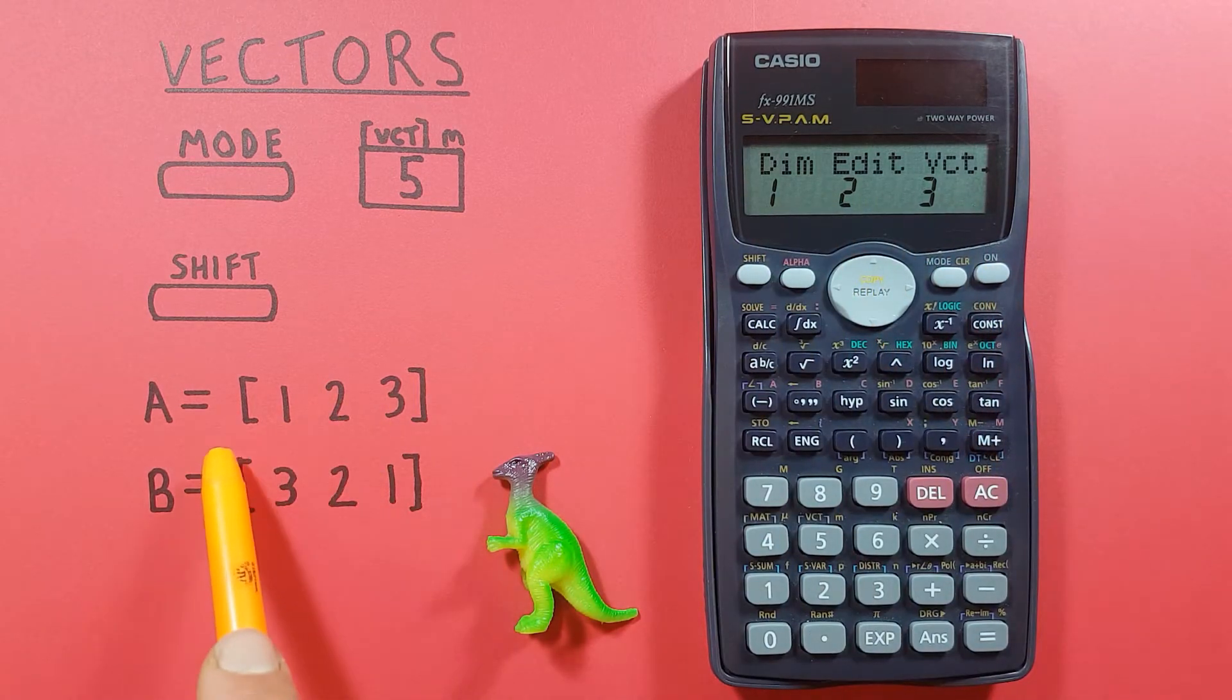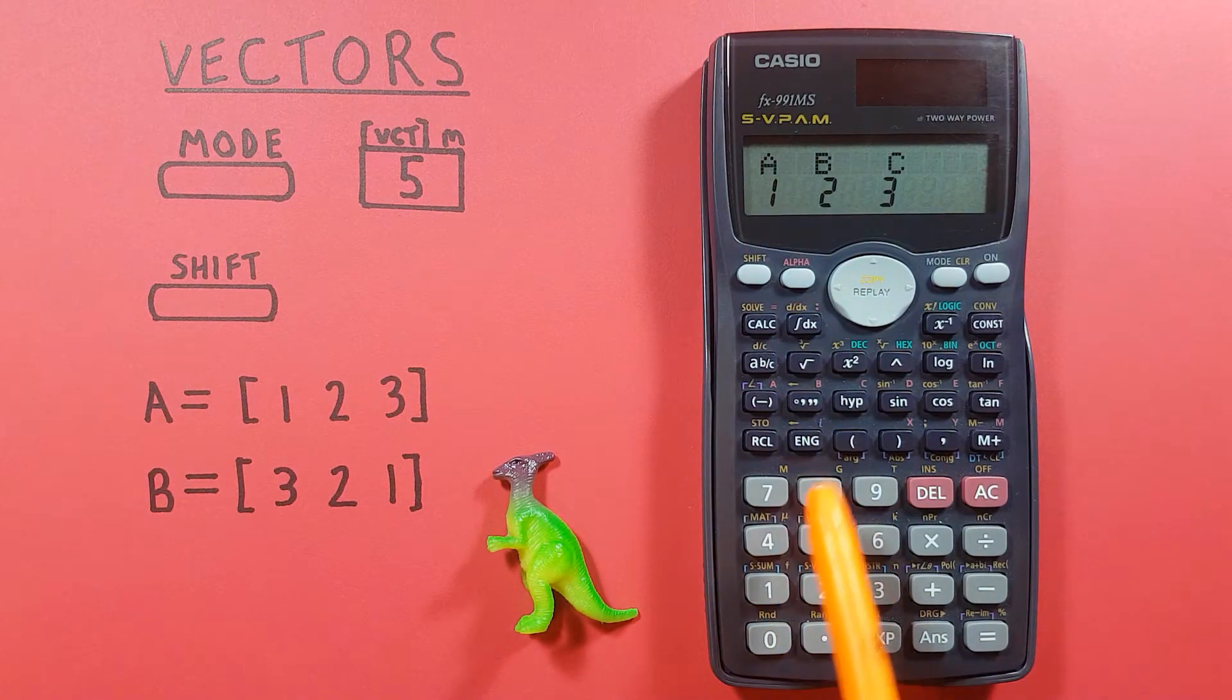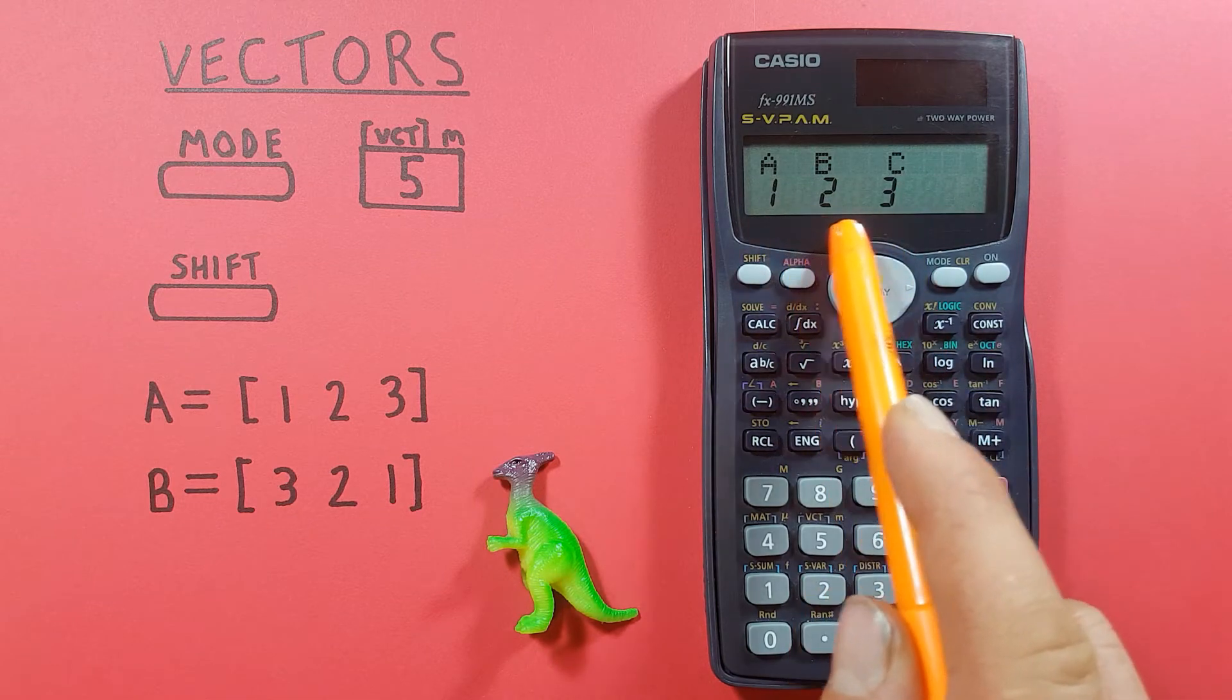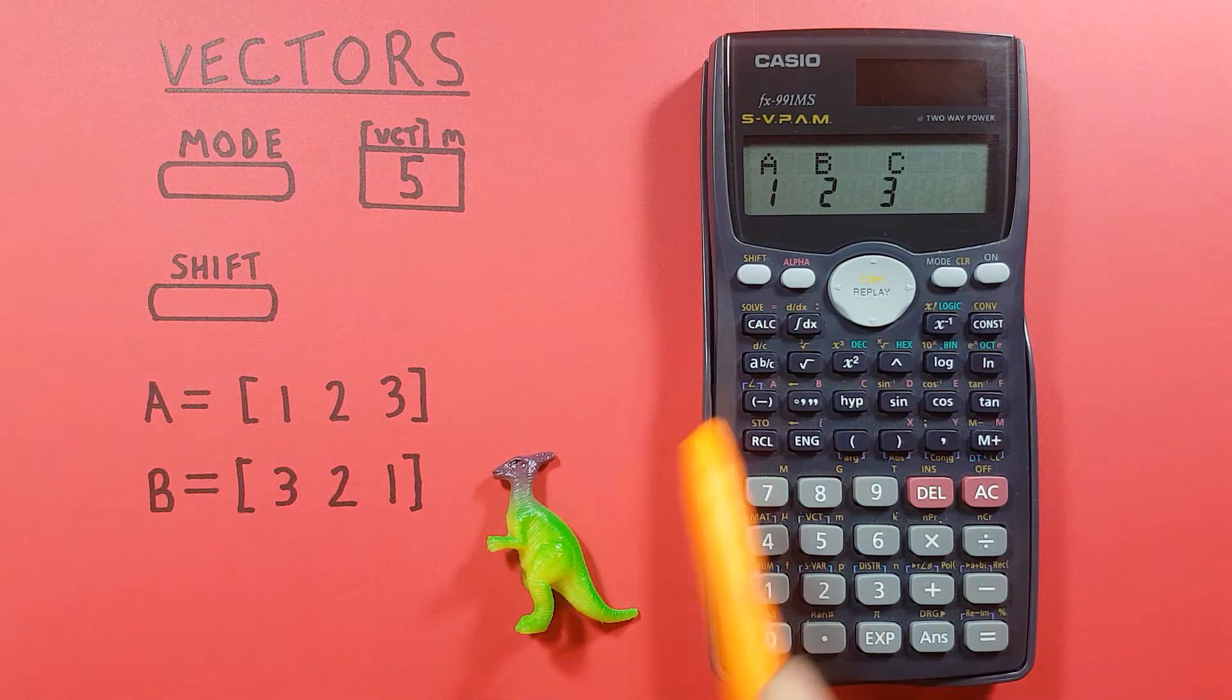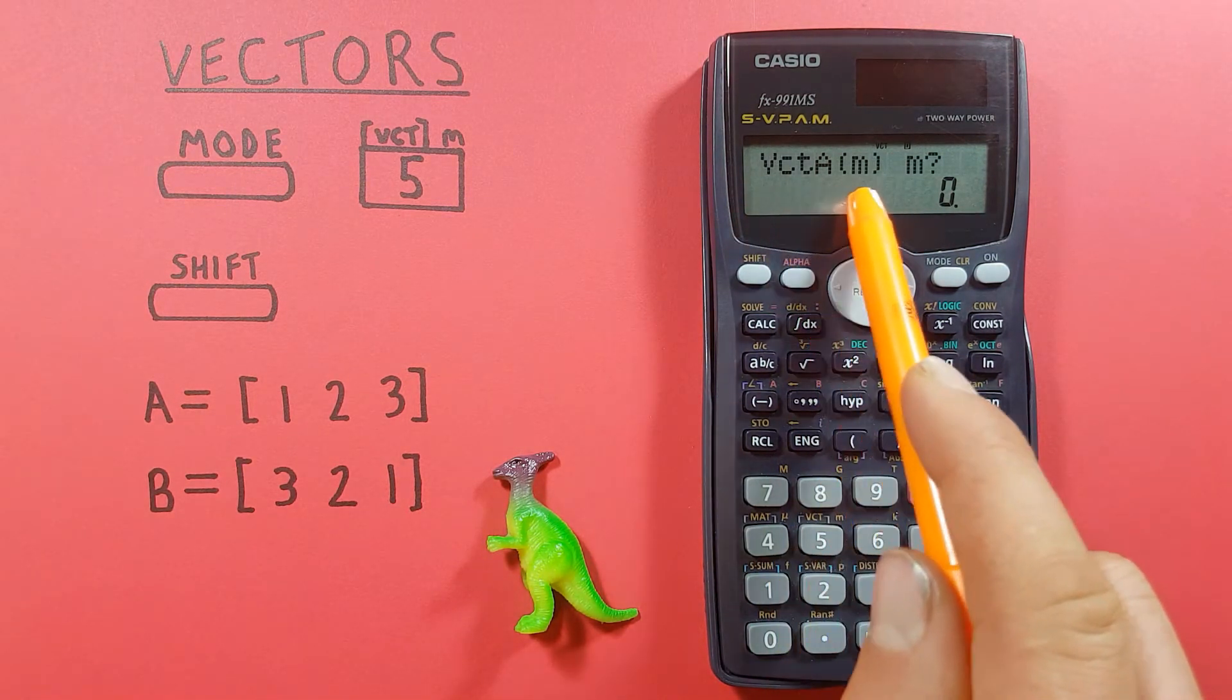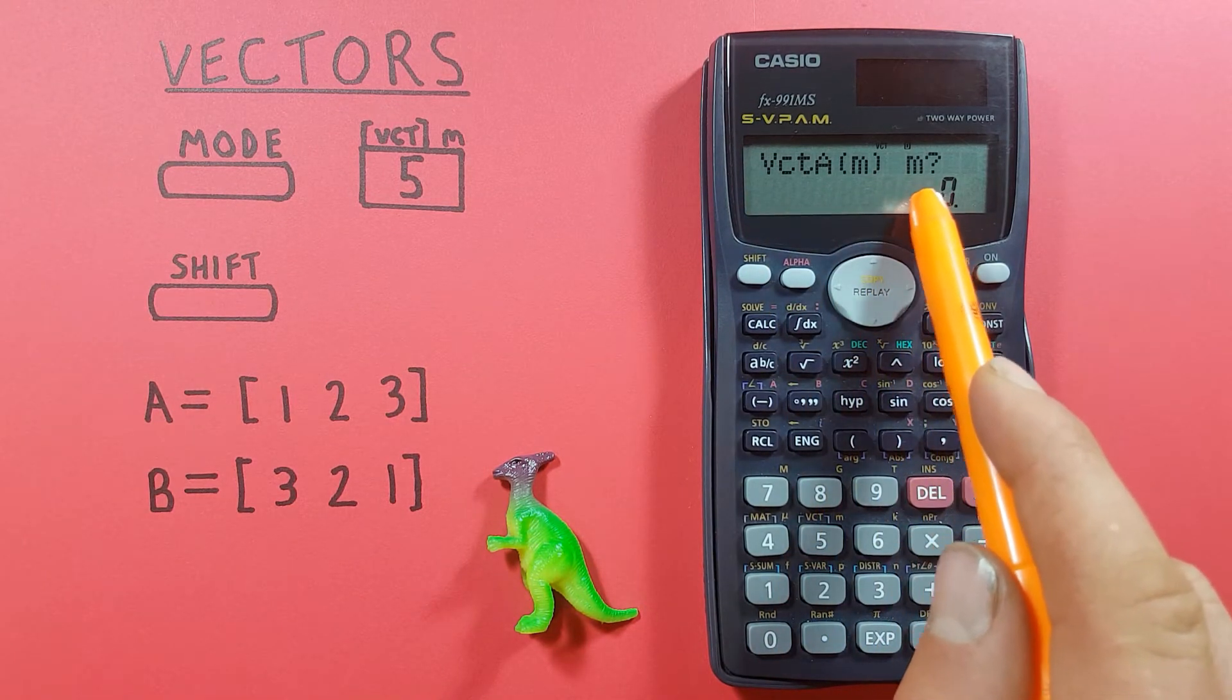When we first want to enter our vectors we want to choose 1 DIM. That will bring us to this menu here where we have three vector slots that we can use: A, B, and C. We'll be using both A and B here so we'll start with A, press 1, and then it'll ask us how many dimensions our vector will be. That's what the M is, is dimensions.